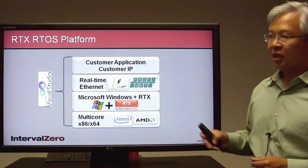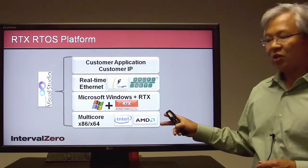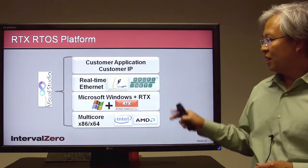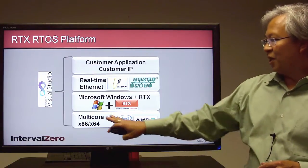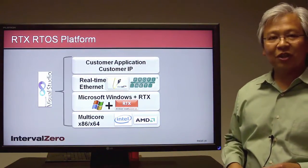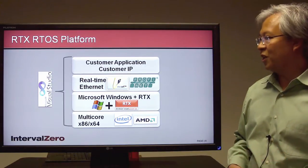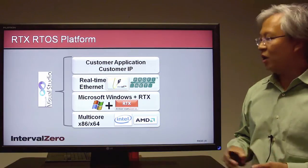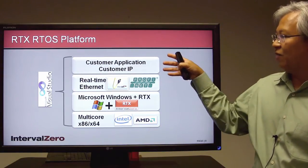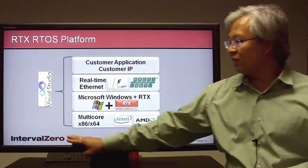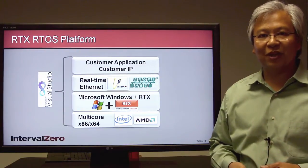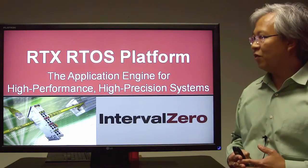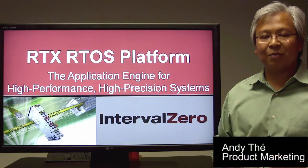Finally, let's take a more complete look at the RTX RTOS platform. Starting at the bottom, we have multi-core x86 hardware, fully taking advantage of Intel and AMD's multi-core roadmaps, which are doubling performance every 18 months. Next, we have Microsoft Windows combined with RTX — Microsoft delivering the full Windows experience, transformed into a real-time operating system with symmetric multiprocessing. And finally, real-time Ethernet: using something like EtherCAT or Profinet gives you low-cost Ethernet hardware delivering hard real-time communications with safety. The application layer sits on top, and all of this is developed under a single integrated development environment — Visual Studio. This is how the RTX RTOS platform truly is the application engine for high-performance and high-precision systems.